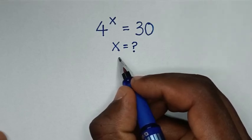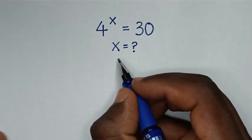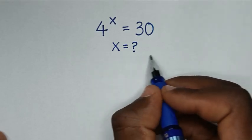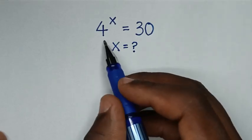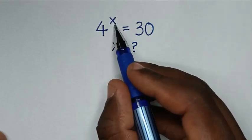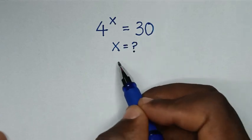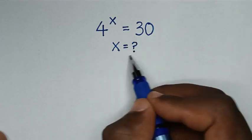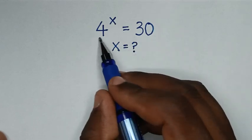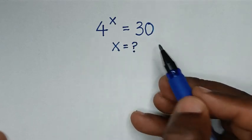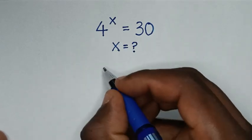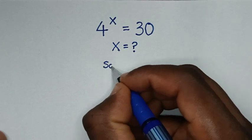Hello, you are welcome to solve this math problem which is 4 to the power x is equal to 30. We need to find the value of x from this equation. Now, solution.